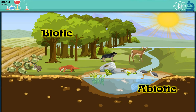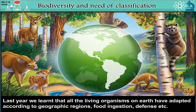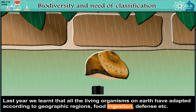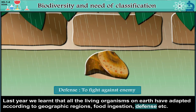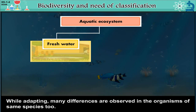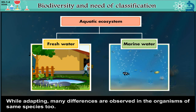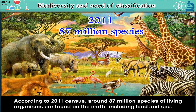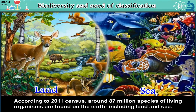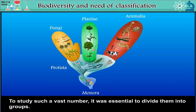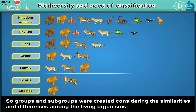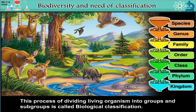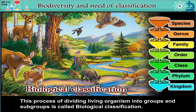Biodiversity and Need of Classification. Last year, we learned that all living organisms on Earth have adapted according to geographic regions, food ingestion, defense, etc. Ingestion means taking in food, and defense means to fight against enemies. While adapting, many differences are observed in organisms of the same species too. According to a 2011 census, around 87 million species of living organisms are found on Earth, including land and sea. To study such a vast number, it was essential to divide them into groups, so groups and subgroups were created considering the similarities and differences among living organisms. This process of dividing living organisms into groups and subgroups is called biological classification.